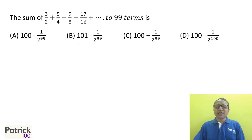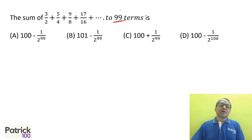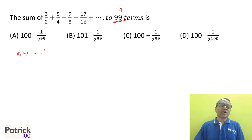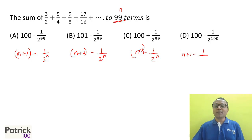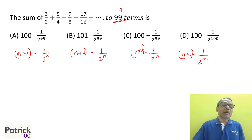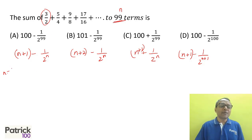For the next question with 99 terms, use options to generalize. Let n = number of terms. Option A becomes (n+1−1)/2^n, option B becomes (n+2−1)/2^n, option C becomes (n+1)/2^n, option D becomes (n+1−1)/2^(n+1). Now set n = 1 — the answer for the first term should be 3/2. Substituting n = 1 into option A gives (2−1)/2^1 = 1/2... wait, checking: option A gives 2.